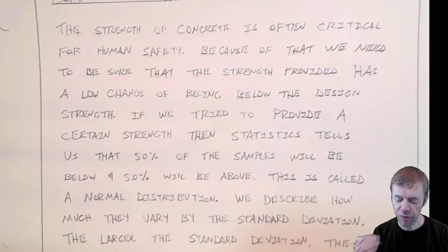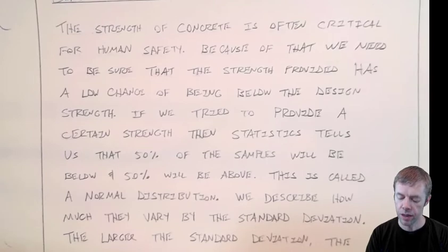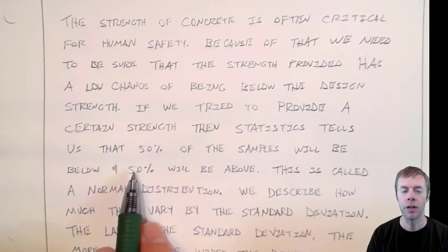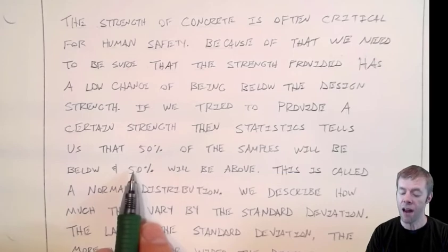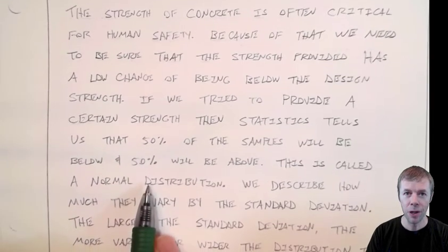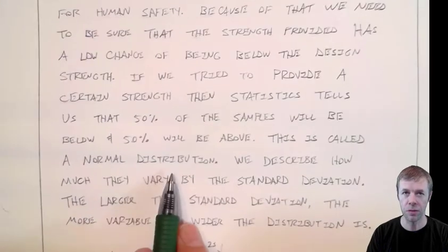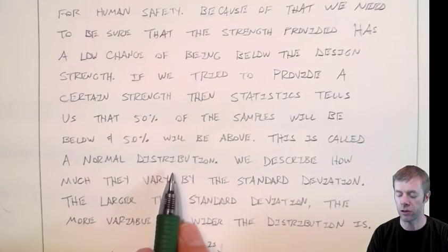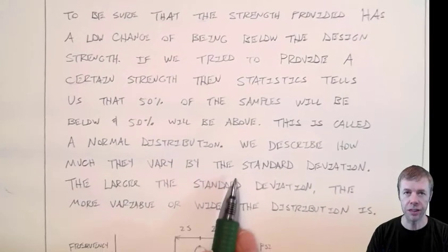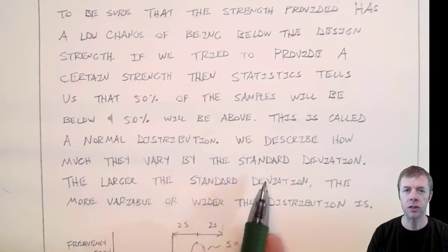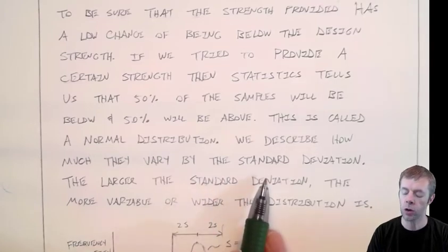If we try to provide a certain target strength then statistics tells us that 50% of the time we'd be below that and 50% of the time we'd be above that. This whole idea is called the normal distribution. We describe this variance or how precise these things are by something called a standard deviation.